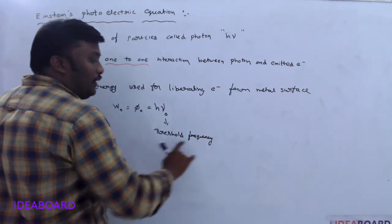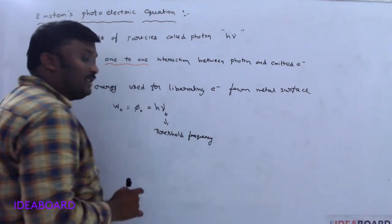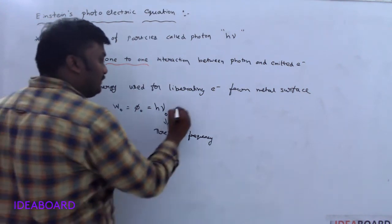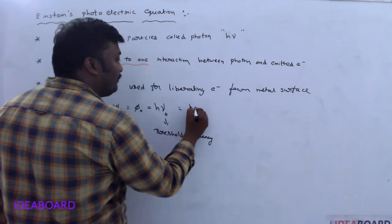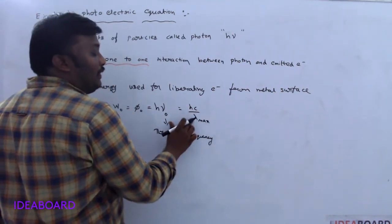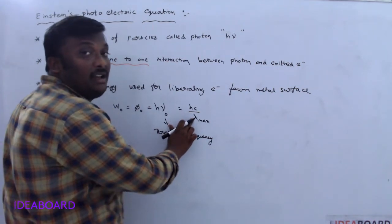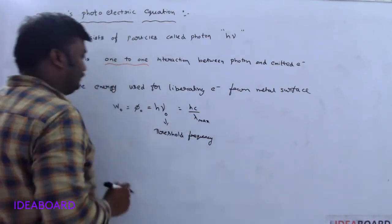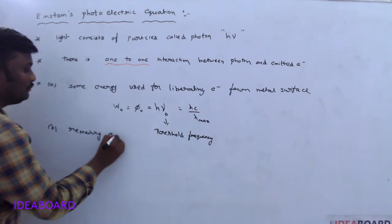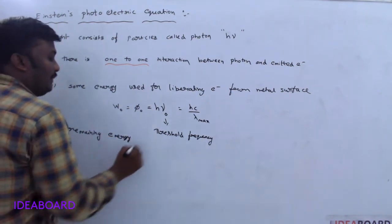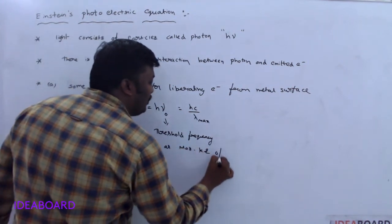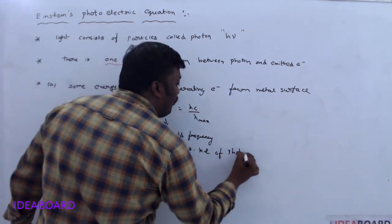Threshold frequency — we discussed this previously — is the minimum frequency below which no photoelectric effect takes place. If frequency is minimum, wavelength is maximum, so the maximum wavelength is named as threshold wavelength. The remaining energy is used as the maximum kinetic energy of the photoelectron.